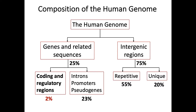This slide shows the composition of the human nuclear genome, which we usually just call the human genome. About 25% of the genome sequences are genes and their related sequences. The other 75% are intergenic regions. A predominant part of intergenic regions consists of repetitive sequences, accounting for about 55% of the whole genome. The STRs we talked about in the last lecture belong to this category.